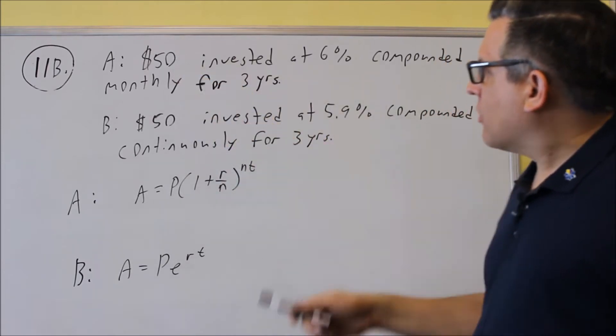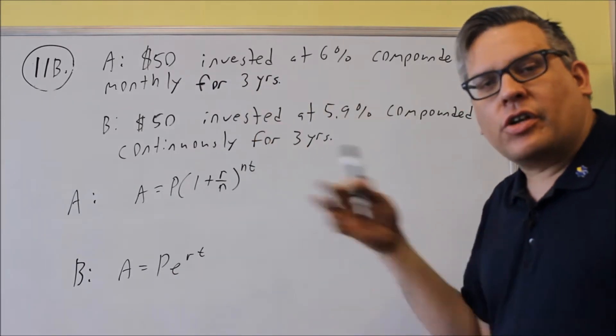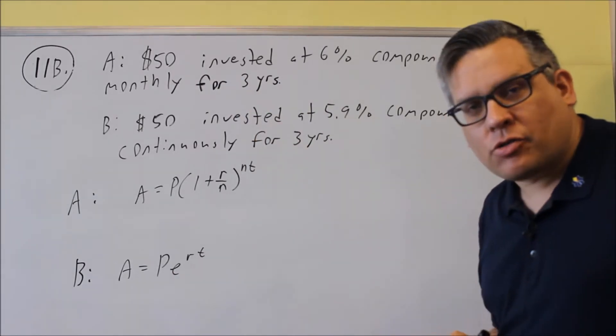We've got $50 invested at 6% compounded monthly. So again, whenever you see monthly, yearly, quarterly, those kind of keywords, you've got to use this formula, compound interest formula.